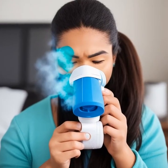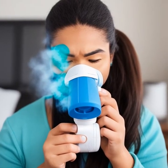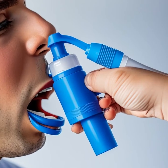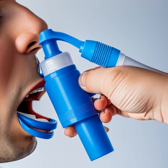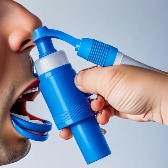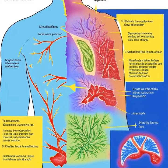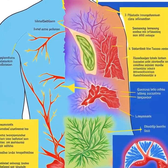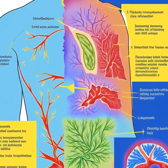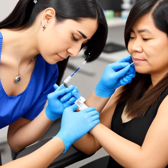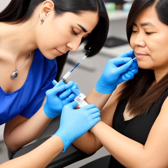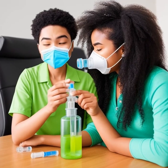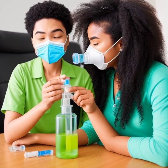Finally, let's discuss the current treatment options and management strategies for asthma. The goal of asthma management is to reduce symptoms, prevent exacerbations, and improve the quality of life for those affected by the condition. This can be achieved through the use of medications, environmental control measures, and patient education. There are several types of medications used to treat asthma, including corticosteroids, bronchodilators, and biologics.